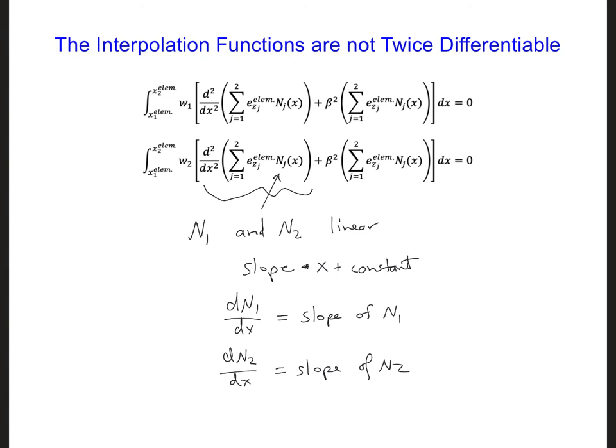But then if we take the second spatial derivative of N1, we're going to get 0. And the same for N2, the second spatial derivative will be equal to 0. If half of the equation we want to solve, this wave equation, is always equal to 0, we're not really solving the full wave equation.